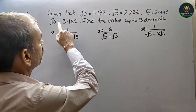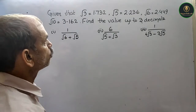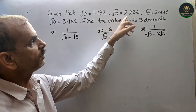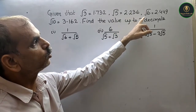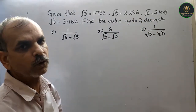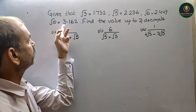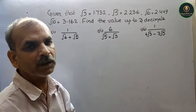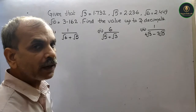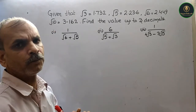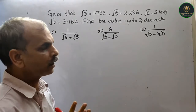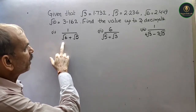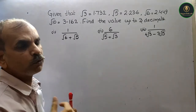Aapka question hai: given that root 3 is equal to 1.732, root 5 is equal to 2.236, root 6 is equal to 2.449, root 10 is equal to 3.162. Find the value up to 3 decimals — that means we have to find up to 3 decimals — of 1 by root 6 plus root 5.